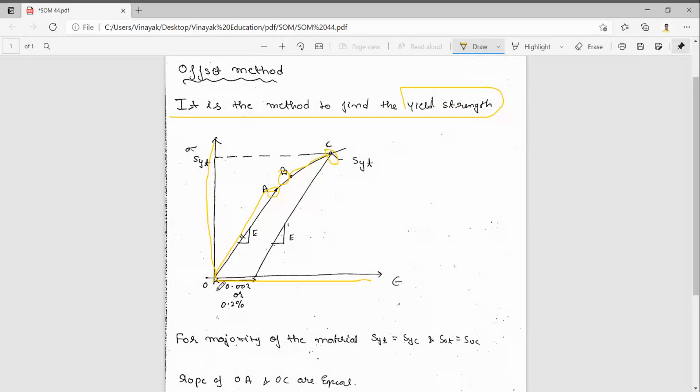We should take 0.002 or 0.2 percentage of strain and draw a line parallel to this line. See where the curve is cutting - where the curve is cutting, that is the yield strength of that material.